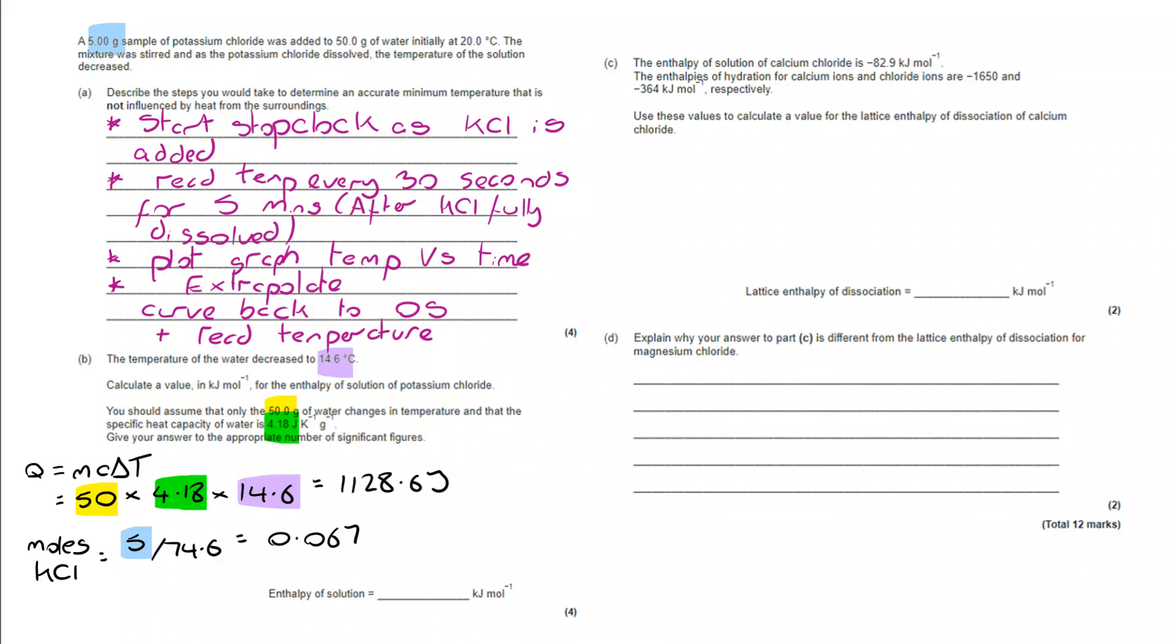A couple of things I need to do here. I need to convert my joules into kilojoules, dividing by 1,000. Once I've got my kilojoules, I divide by my number of moles, 0.067, and that takes me to an answer of plus 16.8 kilojoules per mole.